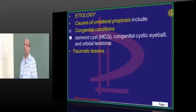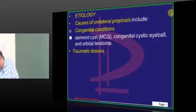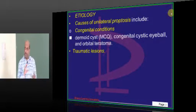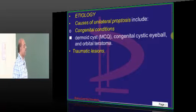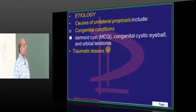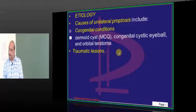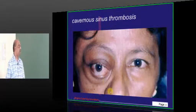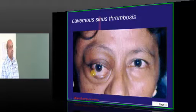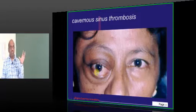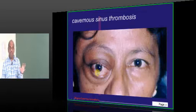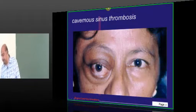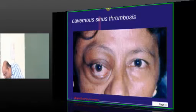So, what are the causes of unilateral proptosis? We have dermoids, congenital cystic eyeball, or an orbital teratoma. Traumatic lesions can also lead to unilateral proptosis. A classical example: someone presenting with chemosis in a toxic state along with proptosis — you think of the possibility of cavernous sinus thrombosis.